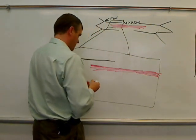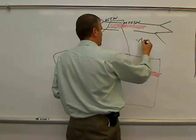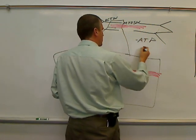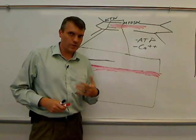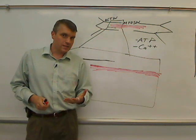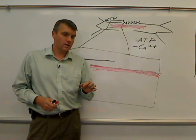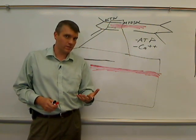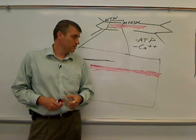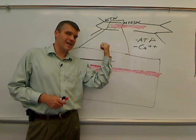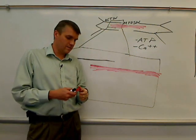There's a couple other things that we need. We're going to need ATP, and we're going to need calcium. Remember that the last thing that we did in excitation contraction coupling was say that the action potential moving down a T-tubule causes calcium to be released from the sarcoplasmic reticulum, and that increases calcium levels in this region here inside of the muscle cell. That calcium is going to increase around these actin and myosin filaments.